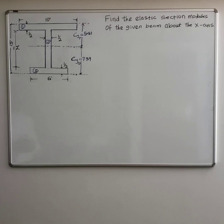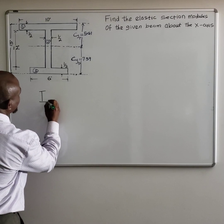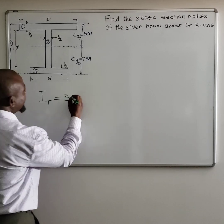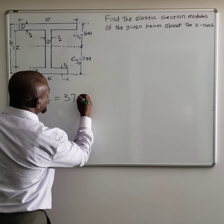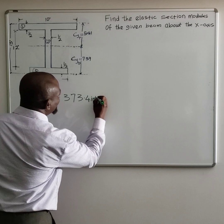In addition to that, we also solved for the moment of inertia about the x-axis. If you remember the value we got, moment of inertia about the x-axis is 373.4 inches to the fourth power. That's what we have.